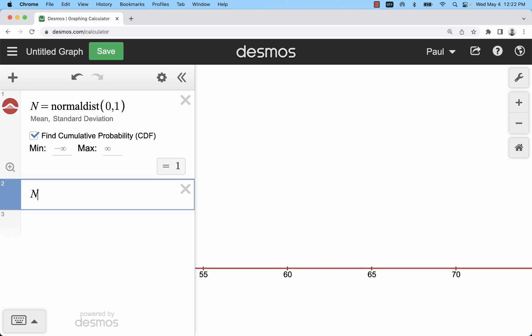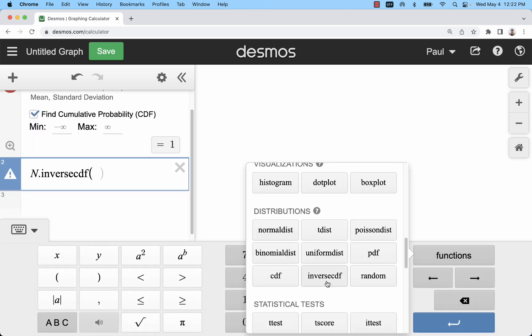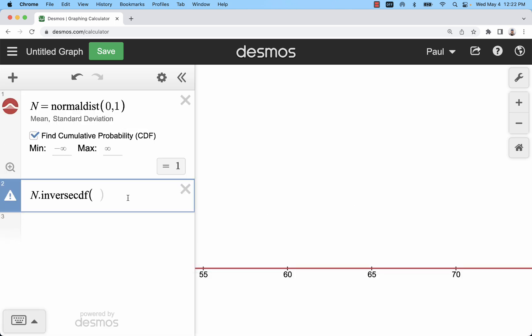So N.inversecdf and it kind of gets a little weird but then if you just keep typing it straightens out. Like I said that's also available in the distribution functions there. So now what I'm doing is I'm typing in a probability.